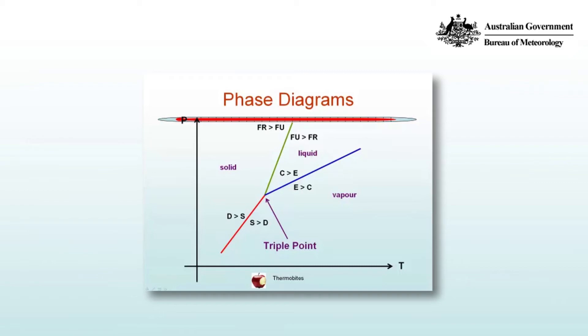Higher up along the green line, on the left hand side, the rate of freezing is greater than the rate of fusion. And on the other side, in the liquid phase, the rate of fusion is greater than the rate of freezing.